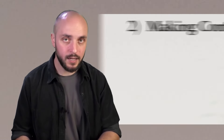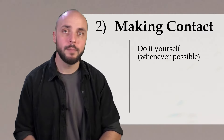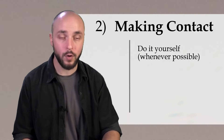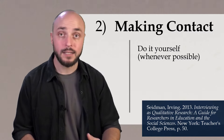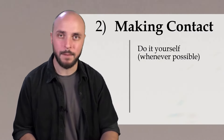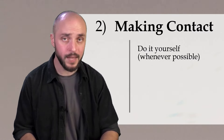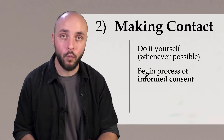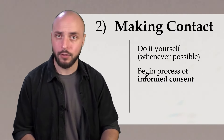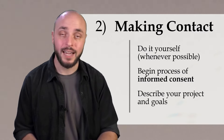When you do make contact, whether by phone, email, or preferably in person, do it yourself. Avoid having other people make contact on your behalf. According to author Irving Seidman, one of the most important parts of making contact is establishing the groundwork for mutual respect. By taking the time to speak with participants and introduce yourself and your study, you demonstrate that you take both your participants and your research seriously. As part of those preliminary conversations, it's also very important to begin the process of informed consent and to describe in broad terms the general subject and goals of your research.